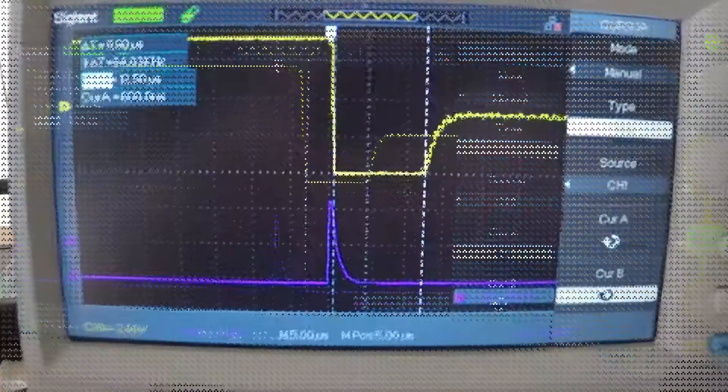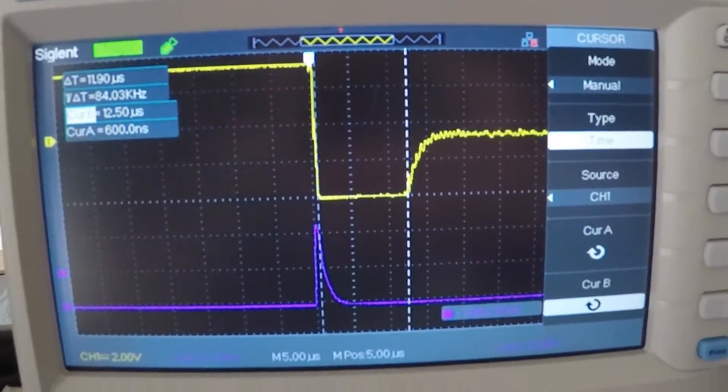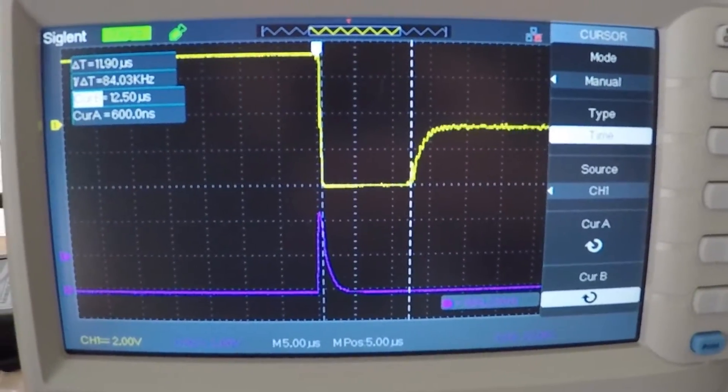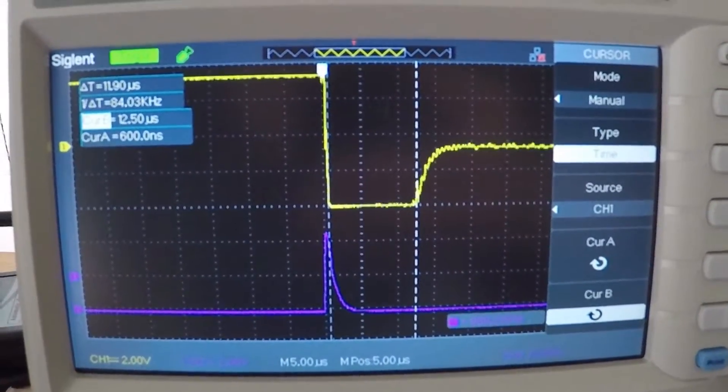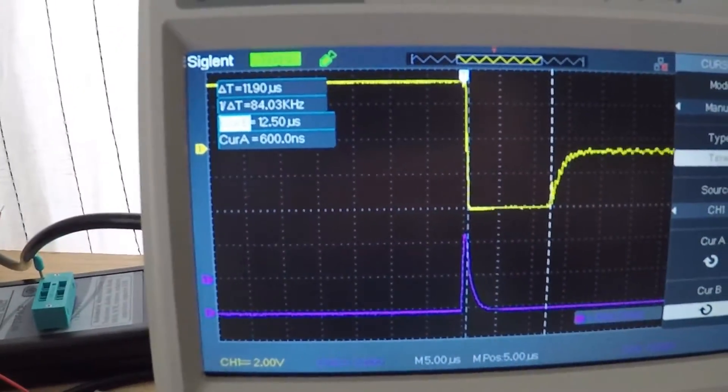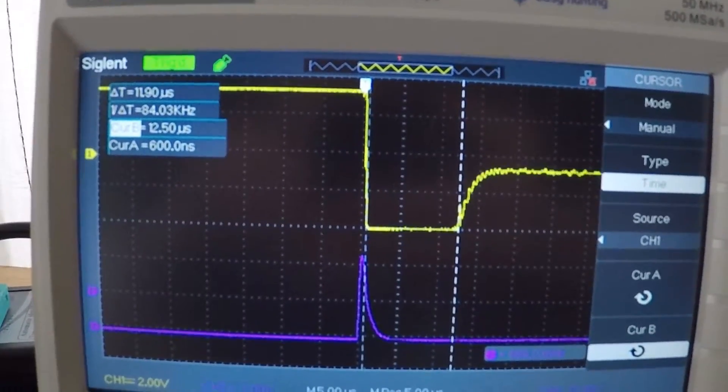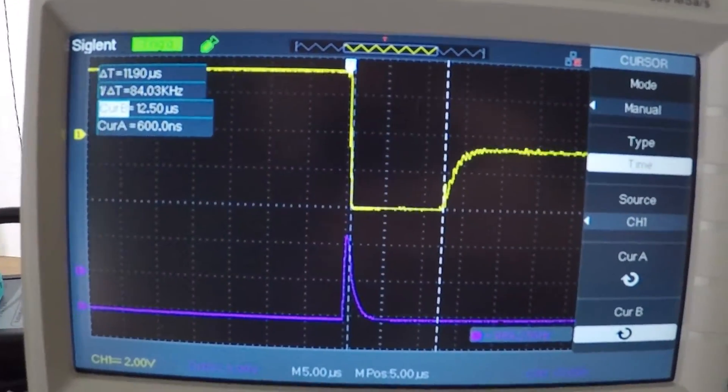Okay guys, I've swapped out for the 4562 now in place of the NE5532. You can see I've redone the cursors, the time and voltage remain the same.